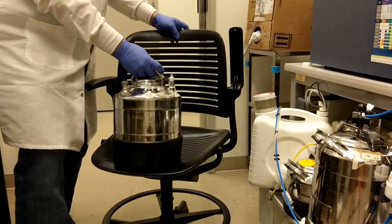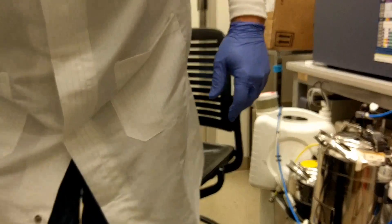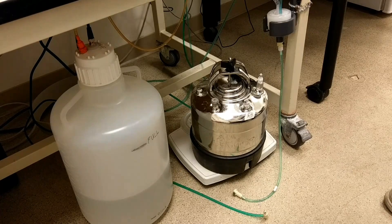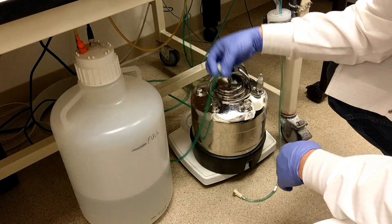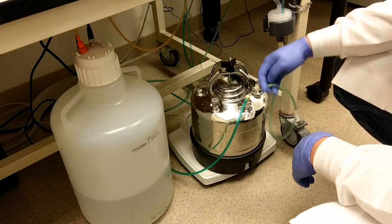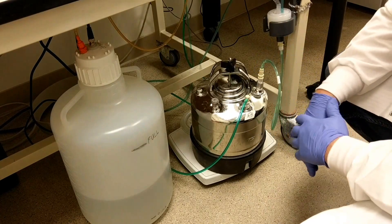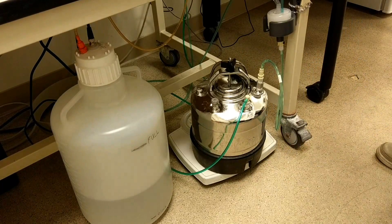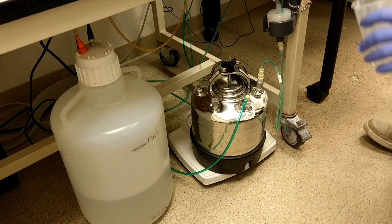Now you can wheel your chair back over, take the tank and put it back. Now you're going to reconnect your airline and your sheath line to the tank.